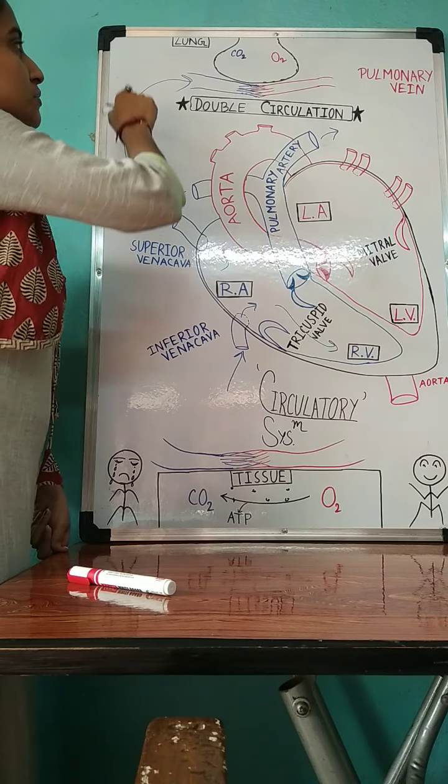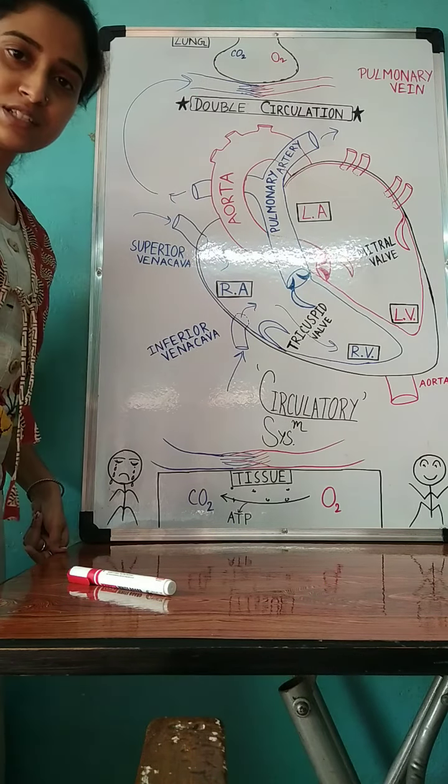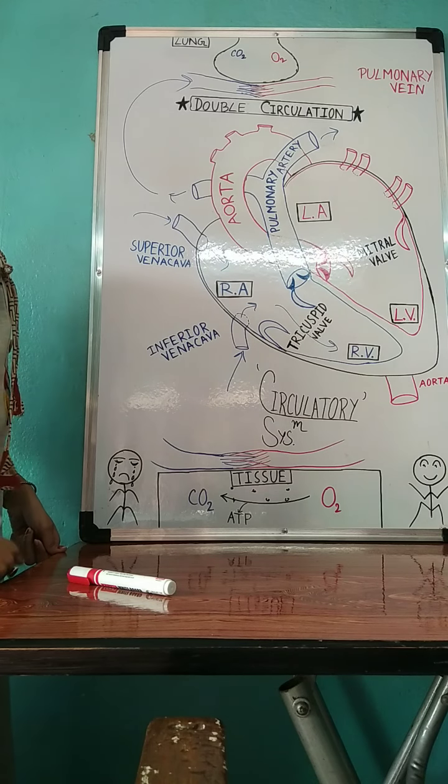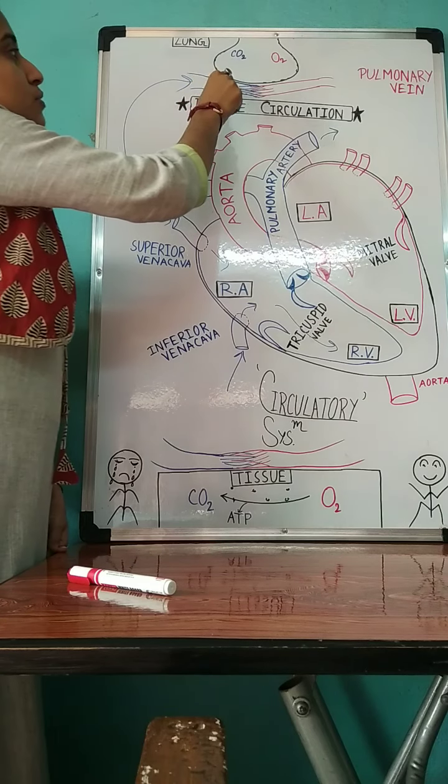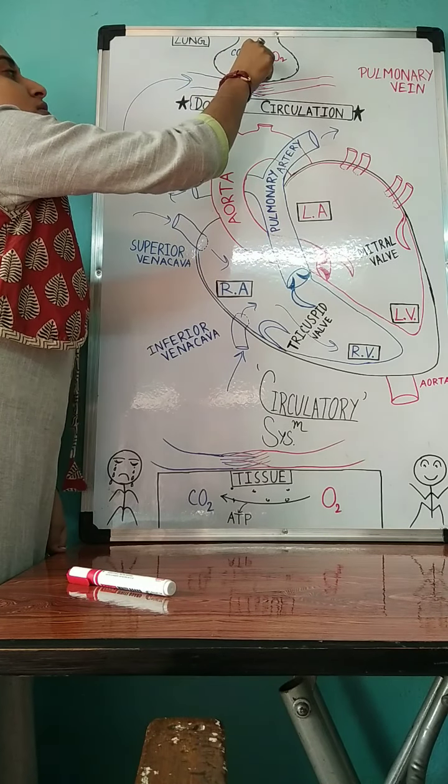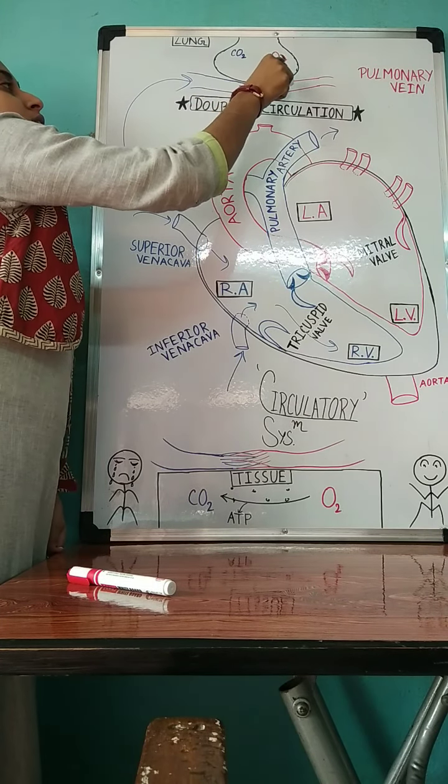Hence it comes to the lung where gaseous exchange occurs. So in the nearby capillary, CO2 goes to the alveoli and oxygen comes to the capillary artery.